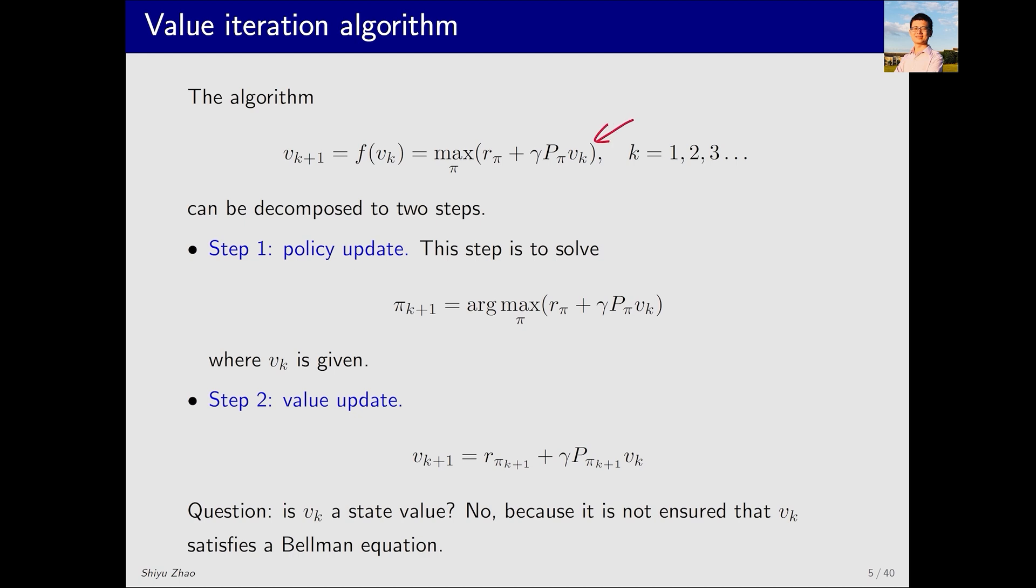Let's look at this algorithm. It consists of two parts. The first part is given v_k. I need to solve an optimization problem to find π. Once π is obtained, we can solve v_k+1. So, this corresponds to two steps. The first step is called policy update. It solves the optimization problem on the right-hand side. Then I can get π_k+1. The second step is value update. I can substitute π_k+1 here. And then based on v_k, I can get v_k+1. So next, we further analyze how to implement this in programming.